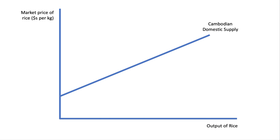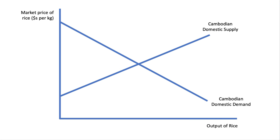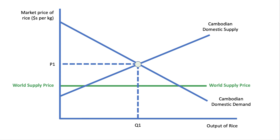There's the Cambodian domestic supply curve — effectively what they can supply at a given price in the market. There's Cambodian domestic demand, which comes from both households and industrial users of rice. In the absence of trade, the equilibrium price for the domestic market would be at price P1 and output Q1. Now if we allow rice to come in at a cheaper world supply price — perhaps other countries including Thailand can supply rice more cheaply than the majority of Cambodian suppliers — that world supply price is below P1, so other countries have a relative cost advantage.